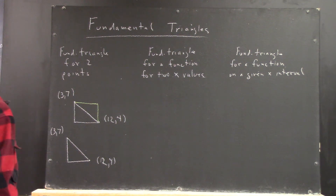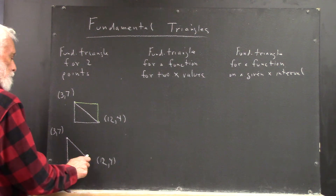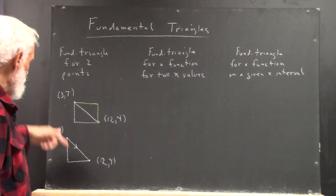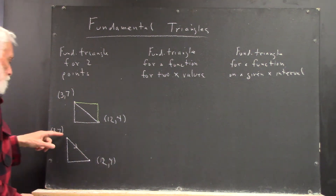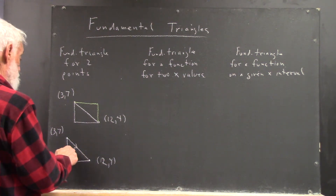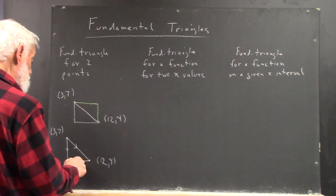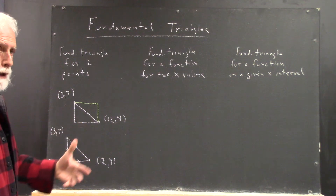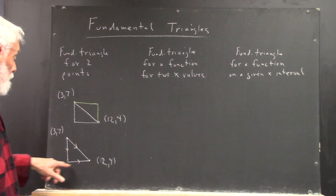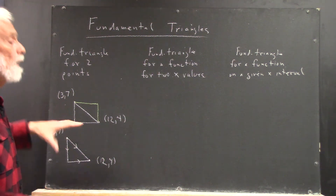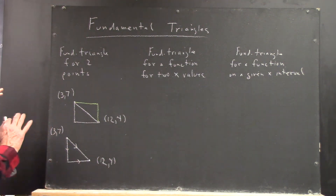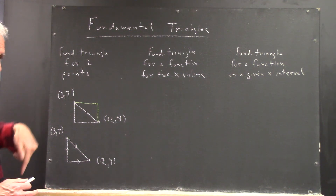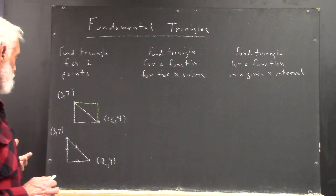Now I'm going to choose a direction from one vertex to the other. Usually we go left to right, but it's not necessary. I'll put a little arrow indicating the direction we're going — from this vertex to this vertex, along the path through the two legs. Those are going to be our positive directions. Our motion is going to be positive or negative according to whether it's in the direction of the positive or negative y-axis, or positive or negative x-axis.